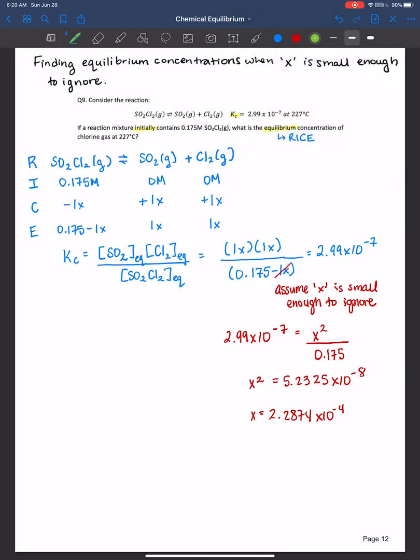Now our question here is, is x small enough to ignore, right? You always want to check to make sure that it's safe to make that assumption. The way to check yourself is to ensure that x is less than 5% of initial value. So how you do that is you divide by the initial concentration 0.175 times 100% because we're just converting it into a percentage.